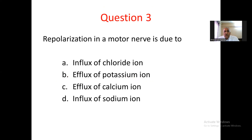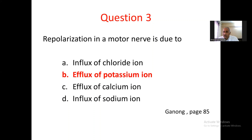Question number 3. Repolarization in a motor nerve is due to: A. influx of chloride ion, B. efflux of potassium ion, C. efflux of calcium ion, D. influx of sodium ion. Repolarization of either a sensory or motor nerve in the action potential is due to the efflux of potassium ion. By this time the sodium channels are closed, and the delayed potassium channels open up. Hence the answer is efflux of potassium ion, which reverses the depolarization produced by sodium entry. Referred to Ganong page 85.